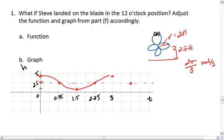This gives us a graph that actually looks a great deal like a cosine graph because we're starting at the top.